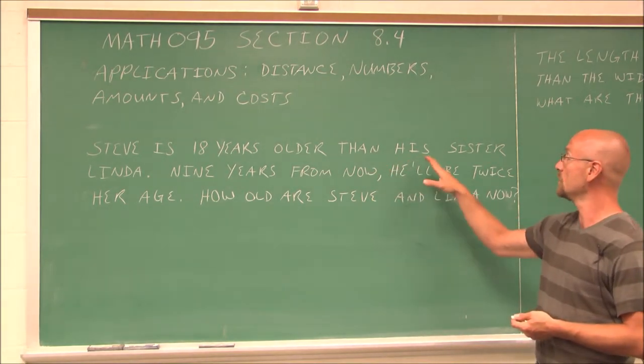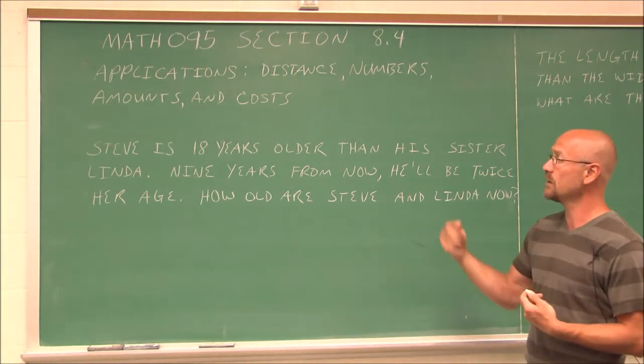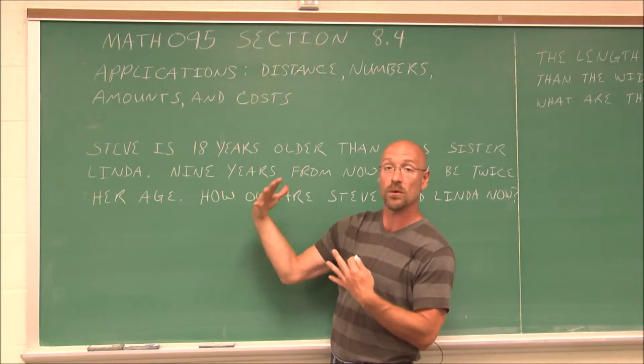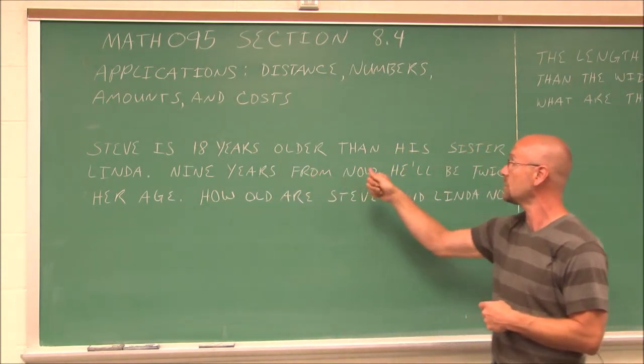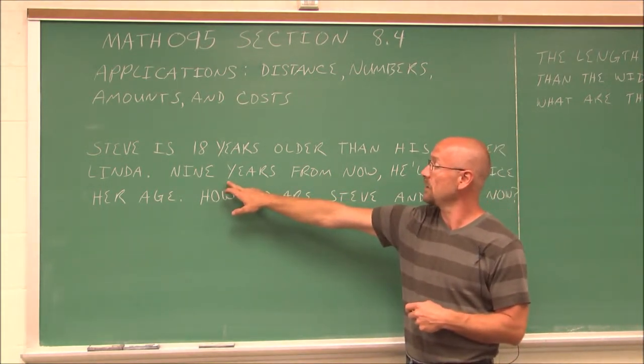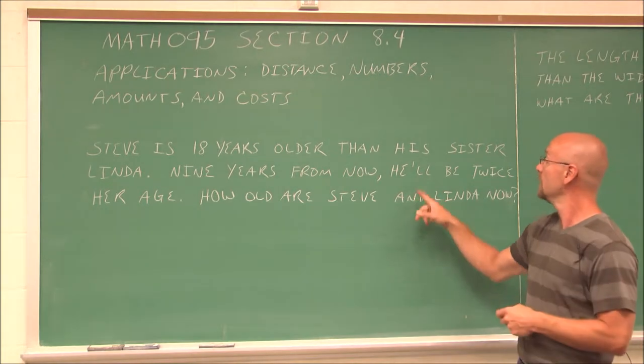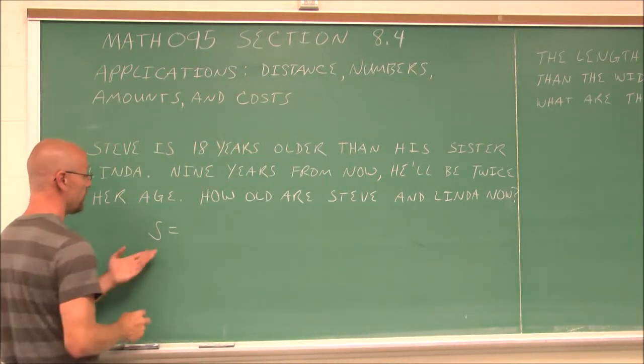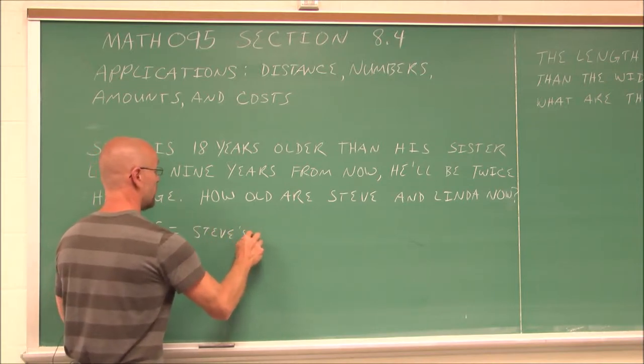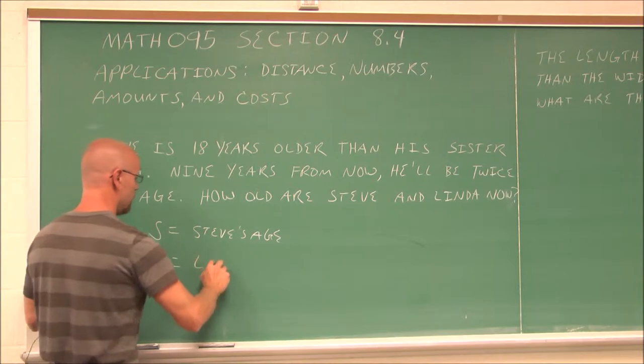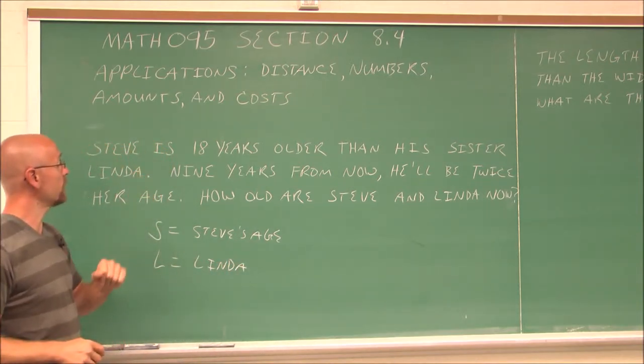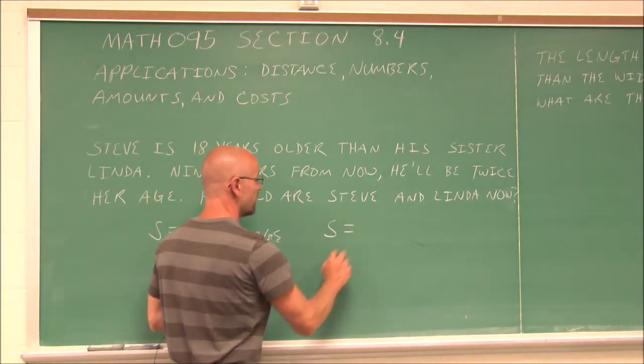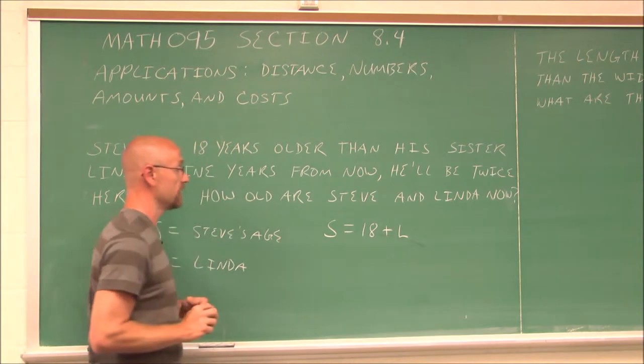Well, Steve is 18 years older than his sister, Linda. We have to assign variables here, because I don't know Steve's age and I don't know Linda's age, but I am given this statement, which is an equality statement. Steve is 18 years older than his sister. Let's assign those variables. Let's say we'll let S equal Steve's age, and we'll let L equal Linda's age. From the first statement, we can start to build an equation. Steve is 18 years older than his sister, Linda. So that's our first equation.